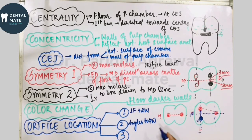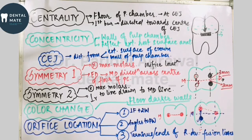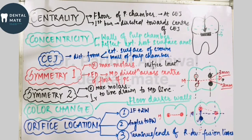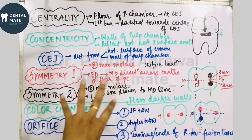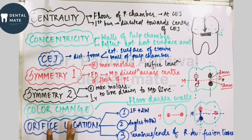The third law of orifice location states that all root canals are located at the terminals or ends of root developmental fusion lines — also called dentinal maps. These fusion lines describe how roots were formed and fused. This third law is used to detect occasional canals, such as the MB2 canal. So these are the nine laws: centrality, concentricity, CEJ, color change, two symmetry laws, and three orifice location laws.